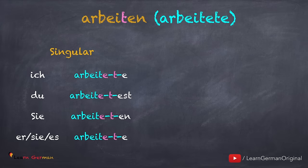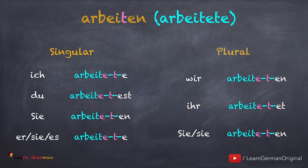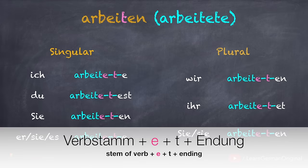Wenn wir im Präteritum konjugieren, sieht es so aus. Ich arbeitete. Du arbeitetest. Sie arbeiteten. Er, sie, es arbeitete. Wir arbeiteten. Ihr arbeitetet. Sie, sie arbeiteten. Hier steht zwischen Verbstamm arbeit und t ein e, und dann kommt die Endung. Die Konjugation für ich und er, sie, es ist immer gleich.